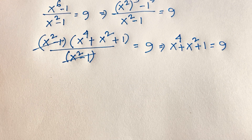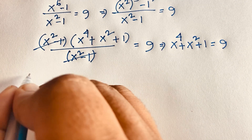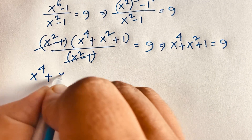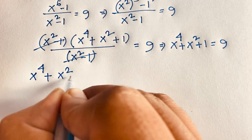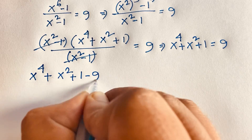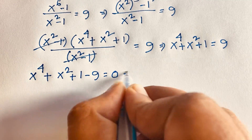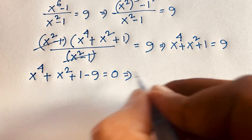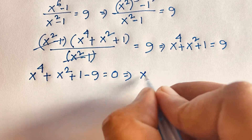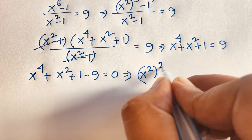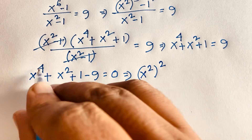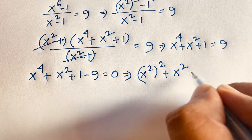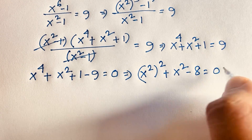Now this equation becomes x to the power 4 plus x to the power 2 plus 1 minus 9 is equal to 0. Moving the 9 to this side makes it negative. We find x squared whole to the power 2 — since 2 times 2 is 4 — plus x squared minus 8 is equal to 0.